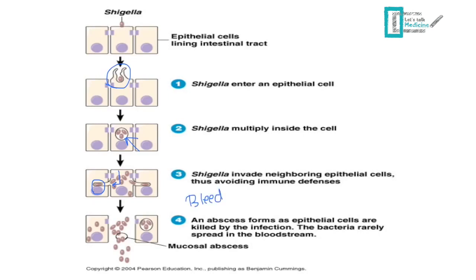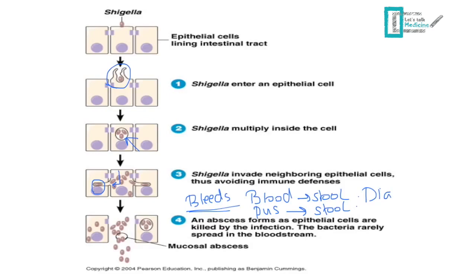Ulcers in the mucosa are prone to bleed, producing blood in the stool. When bacteria invade deeper into the lamina propria, they produce an inflammatory response — an abnormal organism at an abnormal site — triggering cytokine release. White blood cells are recruited, producing pus or white blood cells in the stool. The resulting mucosal damage causes diarrhea, and the triad of blood, pus, and diarrhea is what we call dysentery.